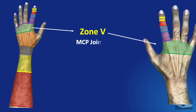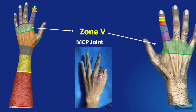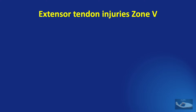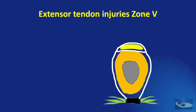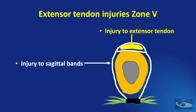Zone 5 injury represents injury to the extensor apparatus over the metacarpophalangeal joint of the fingers. At this level, there are two important structures that can be injured. The extensor tendon is placed on the dorsal aspect. On the volar aspect, we have the volar plate of the MCP joint and the deep transverse metacarpal ligament on either side. From the dorsal aspect of the volar plate, we get two bands of tissue — the sagittal bands — which run dorsally around the joint capsule to encircle the extensor tendon. Injury to the extensor at zone 5 can involve injury to the extensor tendon per se or injury to the sagittal bands.